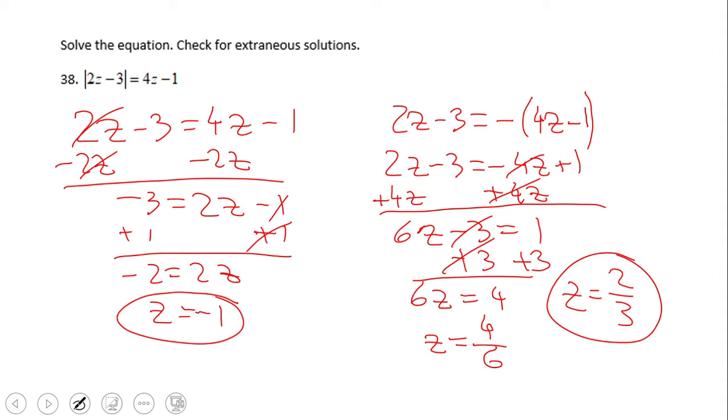As I said, you have to check these two solutions to see if any of those is extraneous. Let's see the first one, negative 1. 2 times negative 1 is negative 2, minus 3, negative 5. So remember here we have absolute value of negative 5, which is 5.